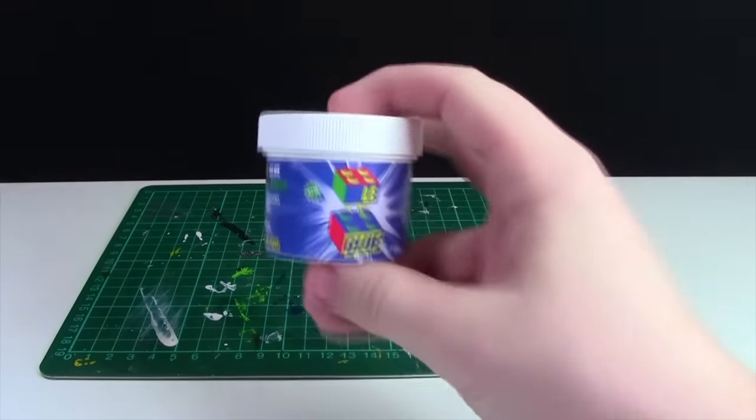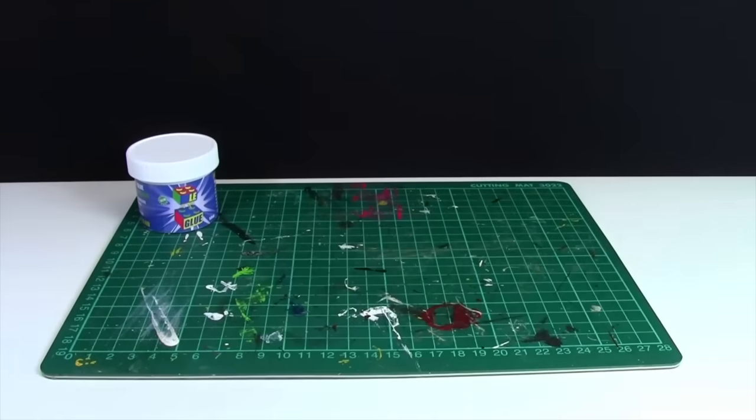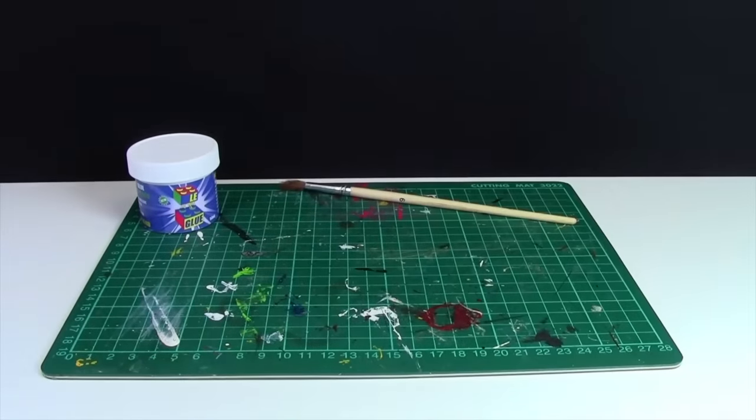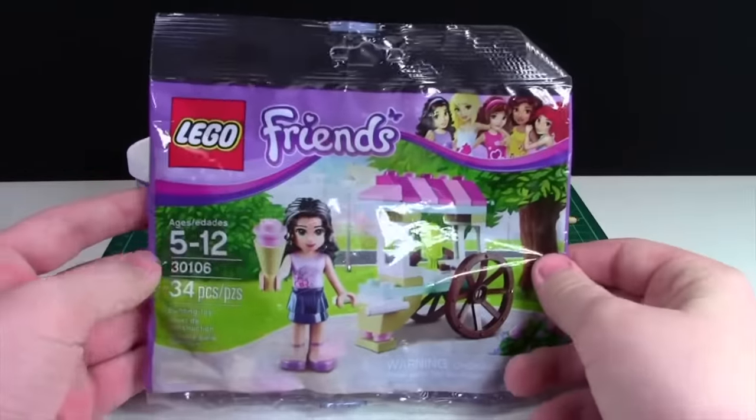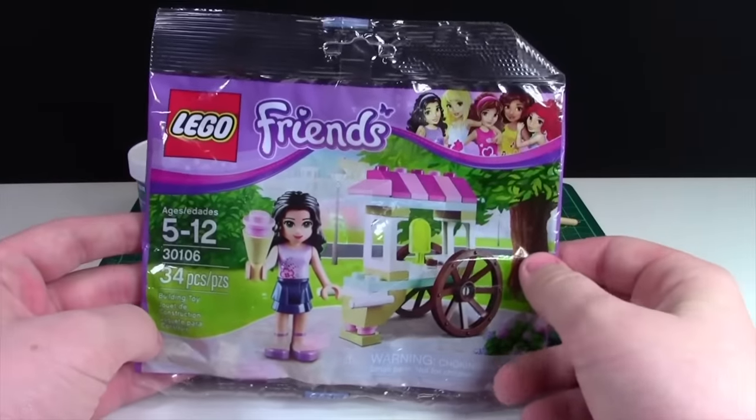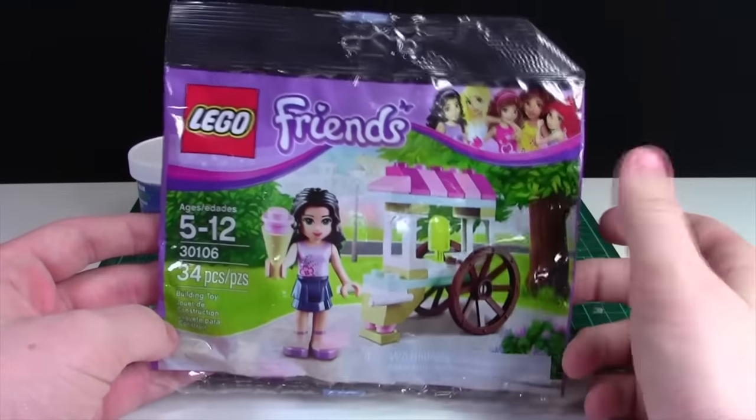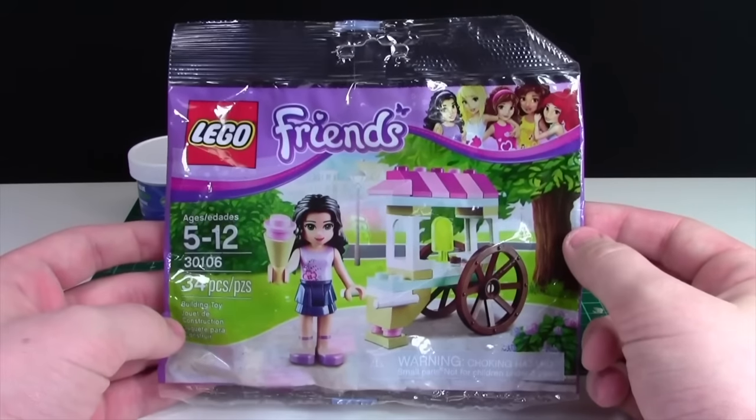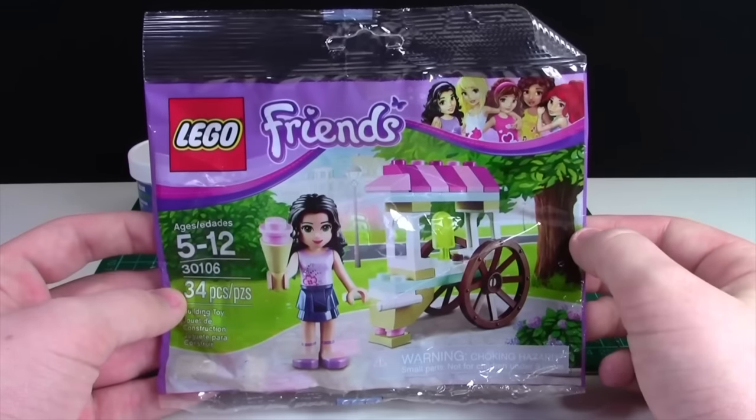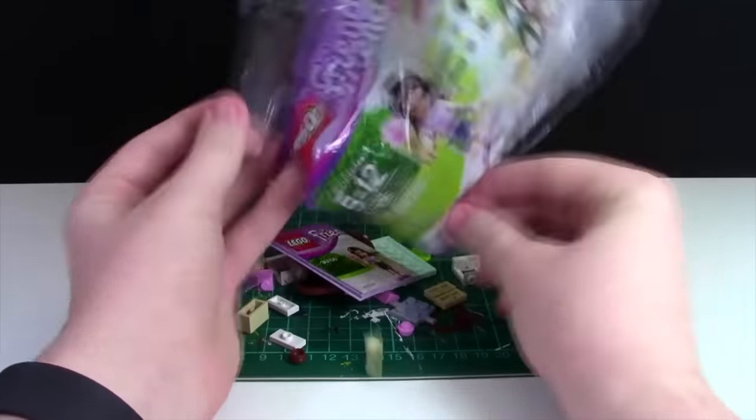Now I've got my cutting mat in place. I'm going to set my leg glue off to the side here and get the Lego set that I'll be building today. I decided that I'm going to build this Lego Friends set and glue it together. This Friends set I've had for a year and a half now and it hasn't sold, so I figured I might as well just glue it up.